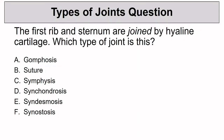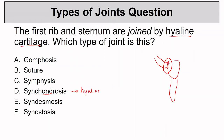Practice question: the first rib and the sternum are joined by hyaline cartilage — what type of joint is this? The sternum, also known as the breastplate, runs right down the middle of our chest. The first rib connects to it by hyaline cartilage. The correct answer is a synchondrosis, since these are bound by hyaline cartilage — a cartilaginous joint.